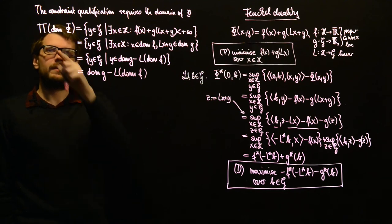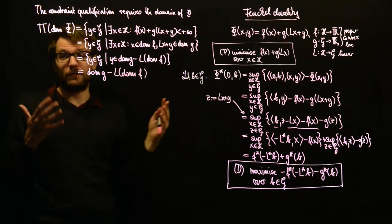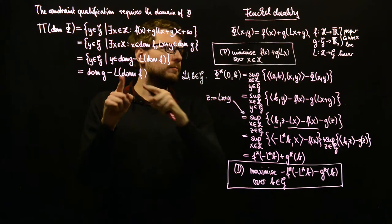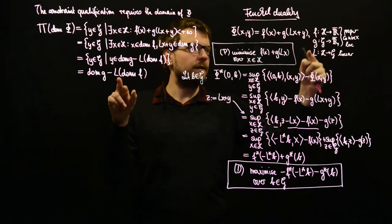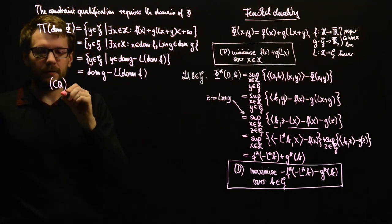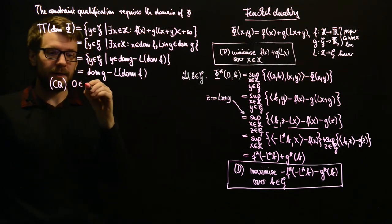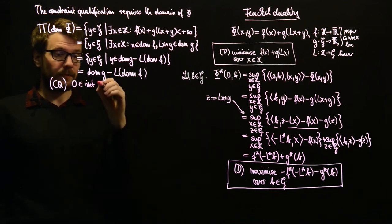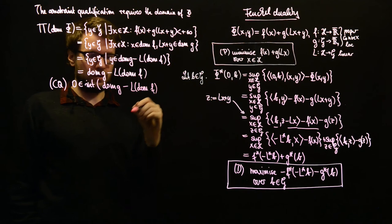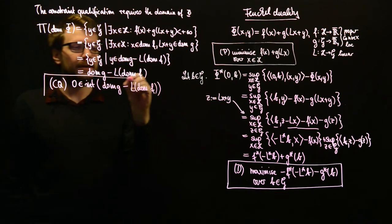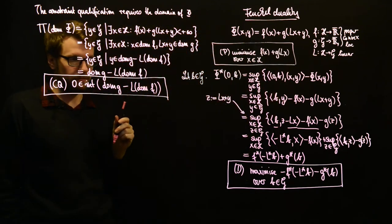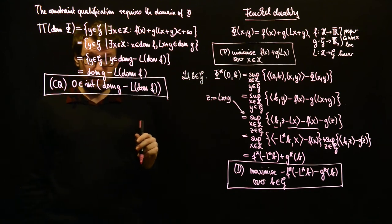We see that this projection of the domain of φ on the second component equals dom g minus L·dom f. Since dom g is a subset of G and mapping dom f with L gives a subset of G, we are in the right space. Therefore, the constraint qualification for problem P is that 0 is in the interior of dom g minus L·dom f.